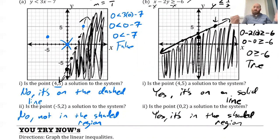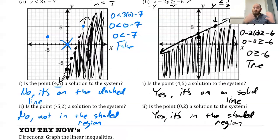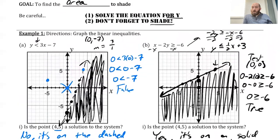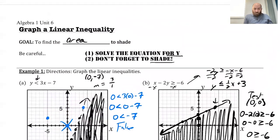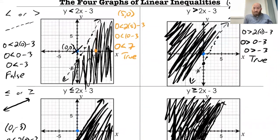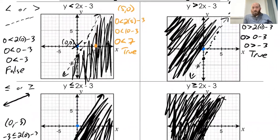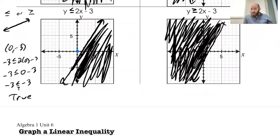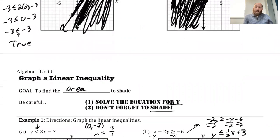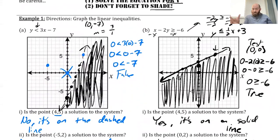The only thing that makes a point a solution is if it's in the shaded region or on a solid line. If it's not in the shaded region, or if it's on a dashed line, those are not solutions. So that is 6C — we are graphing linear inequalities that have two variables, creating these lines. We make sure to graph it in y equals mx plus b form and then shade the proper area. Solutions are in the shaded area or on the solid lines; non-solutions are in the non-shaded region and on the dashed lines. That's it for 6C — take care, everybody.